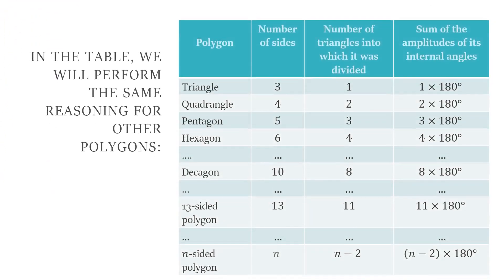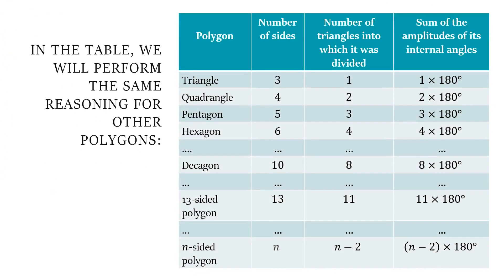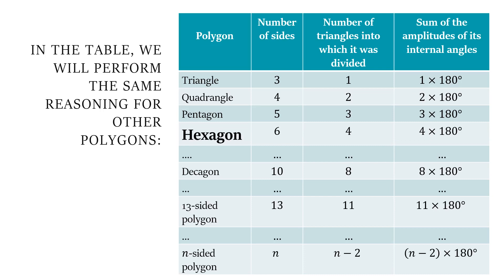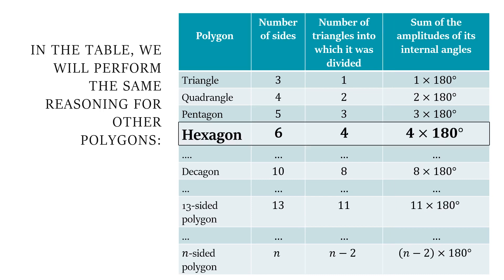In the table, we will perform the same reasoning for the other polygons. For example, a hexagon has 6 sides, which divides into 4 triangles, and then the sum of the internal polygon angles is 4 × 180°.